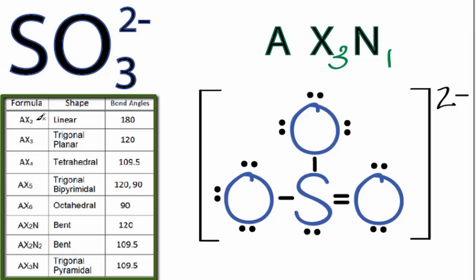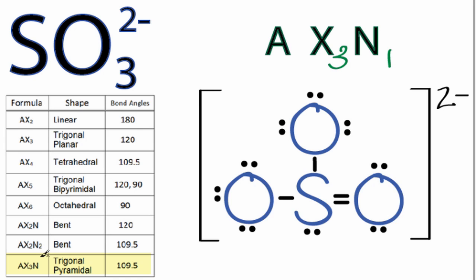So as we go down our table, we have AX2, AX3, AX2N, AX2N2, and there it is, AX3N. That is trigonal pyramidal and has bond angles of 109.5 degrees.